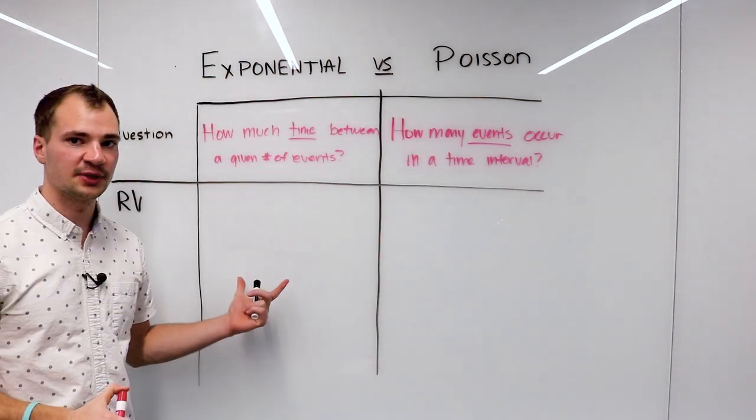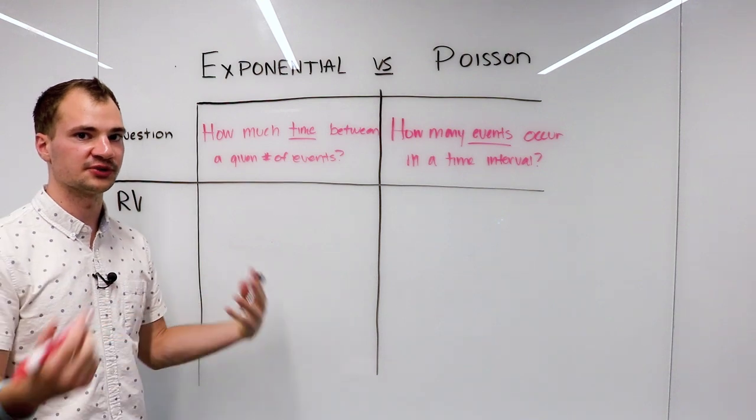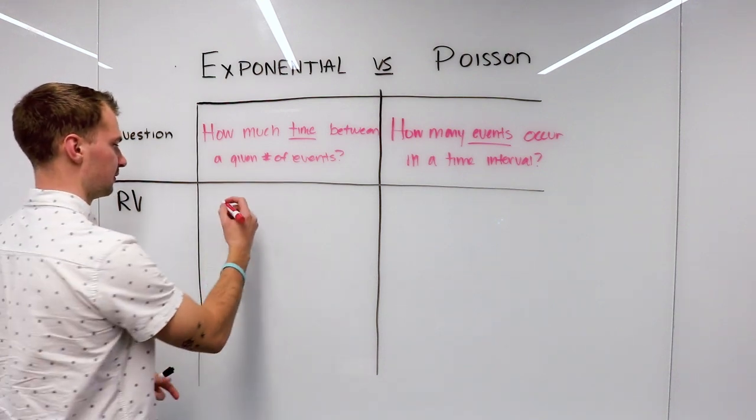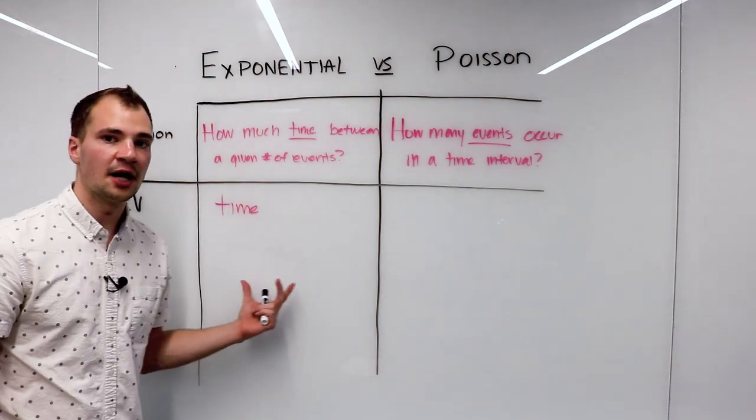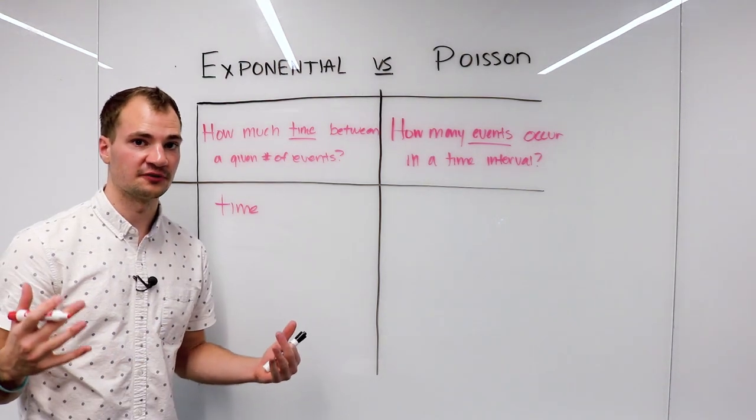So for the exponential, because we're answering how much time occurs, we know that the random variable is going to represent time itself. Now, because time can take on an infinite number of values or an infinite number of decimal places, we know that it's continuous.